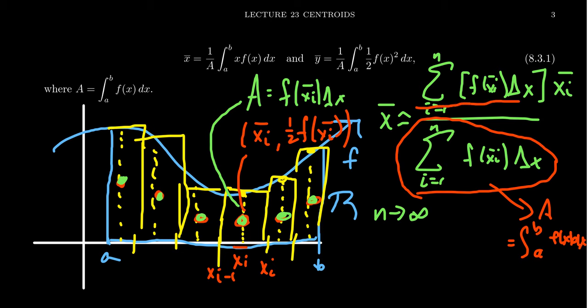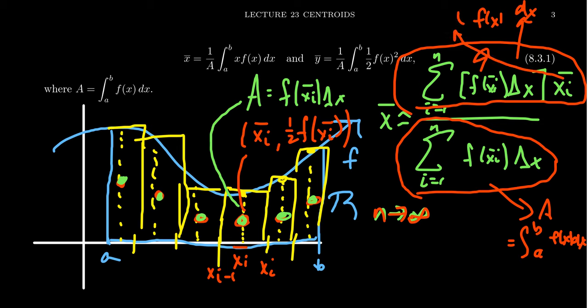What happens on the top? Well, on the top, as n goes to infinity, f of xi bar, that's going to converge to just f of x. The delta x is going to converge to a dx. This xi bar will just become an x, and then our Riemann sum becomes an integral from a to b.